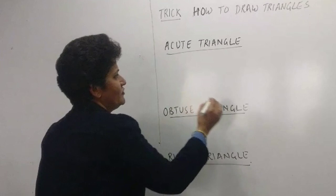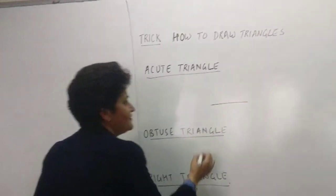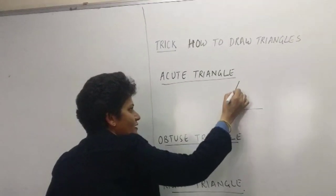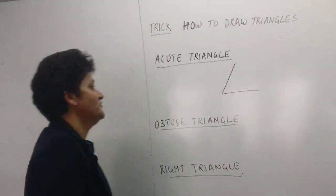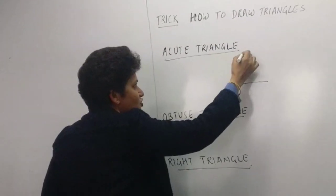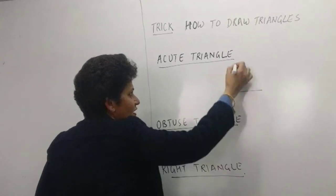So for an acute triangle, what I have to do is draw first one base, and I have to draw one L like this. It is bending in front.